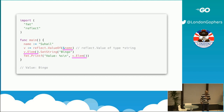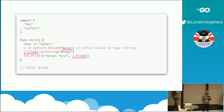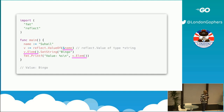To make this work, you need to send a pointer to SetString and to the reflect value, pointing to a memory address that you can change under the hood. Note the addition of the ampersand to send a pointer to name rather than the raw string value, and the change to setting the actual element under the pointer rather than the value itself. Once you've done that, you get the expected value and can change the name to Binger.